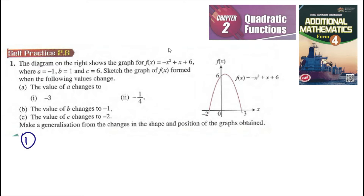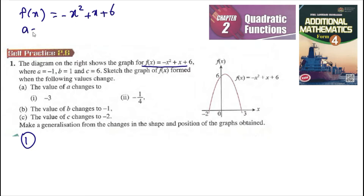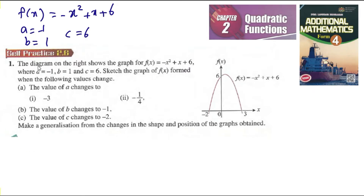We have graph f(x) equal to negative x squared plus x plus 6. So a is equal to negative 1, b is equal to 1, c is equal to 6.